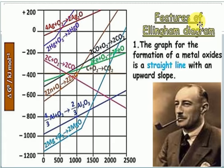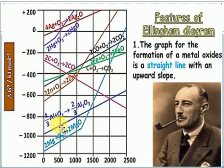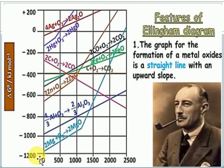The Ellingham diagram, developed by scientist Ellingham, shows how ΔG for metal oxide formation changes with respect to temperature. The features of the Ellingham diagram: first, the graph of formation of metal oxides is a straight line with an upward slope. As temperature increases, ΔG becomes less negative — this means metal oxides become less stable at higher temperatures.